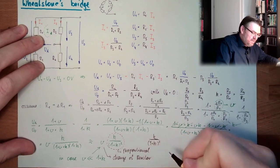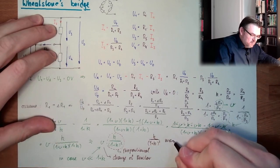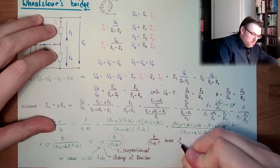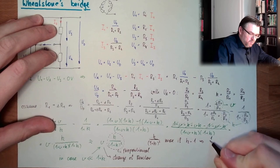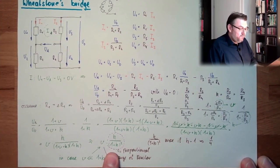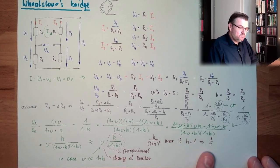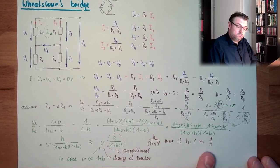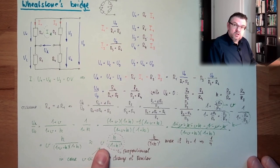This sensitivity K divided by 1 plus K squared is maximum when K equals 1, and then this equals one quarter. So one quarter is the maximum sensitivity of this Wheatstone bridge.